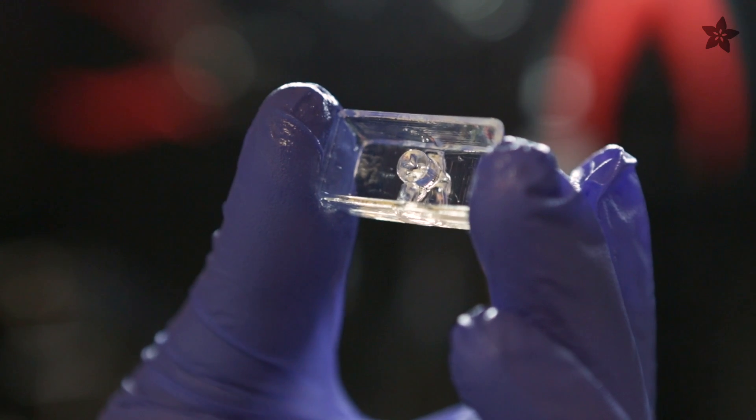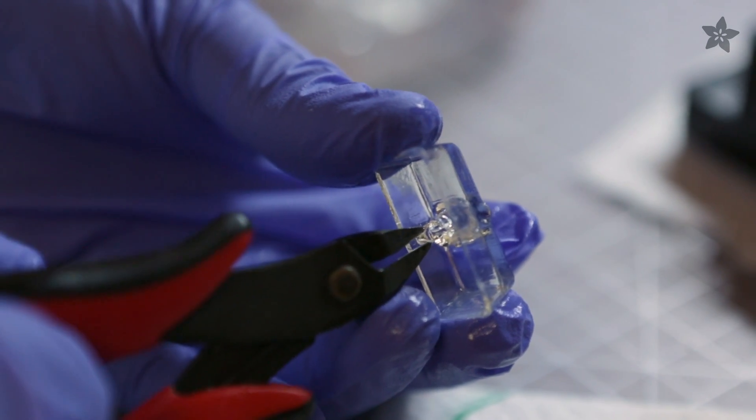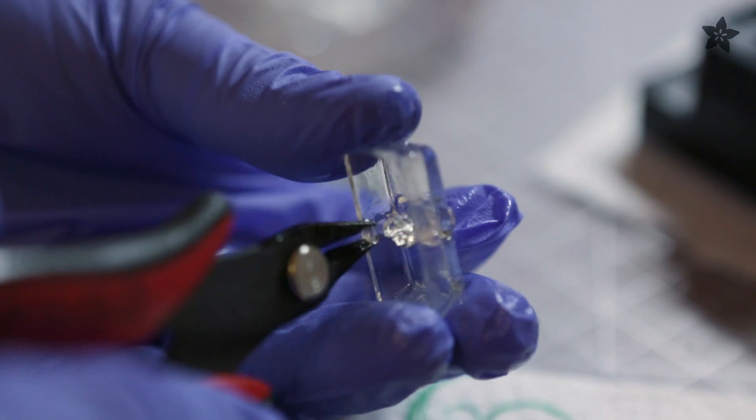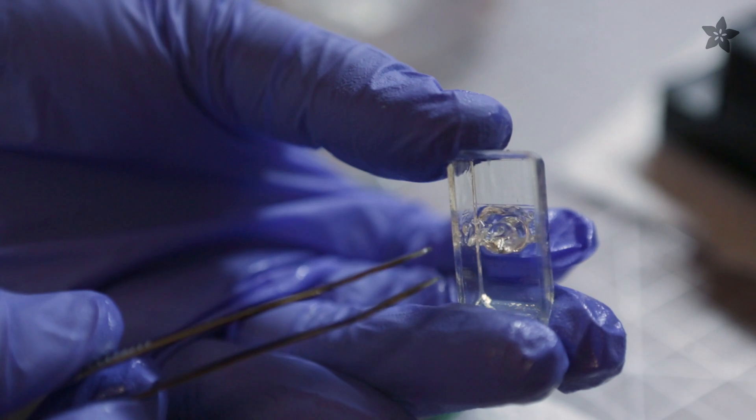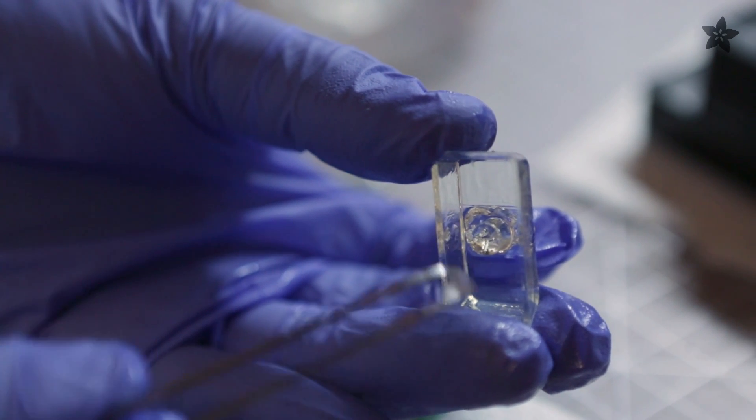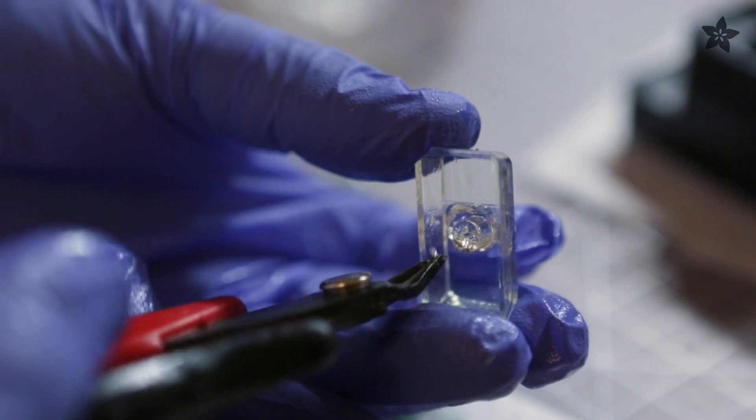To remove the support material, we'll use our Haku flush snips, and this will help break apart the structures. Tweezers will also help remove the little tiny bits, and then we'll start from the front and sort of work our way towards the back.